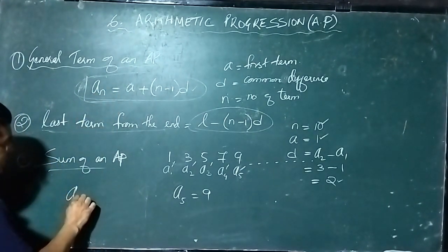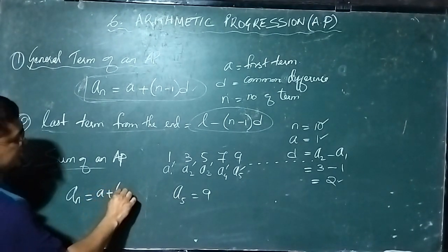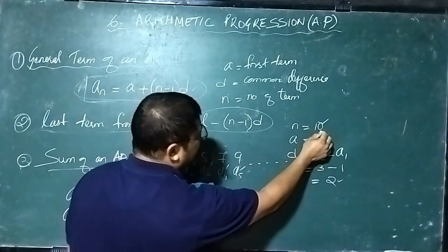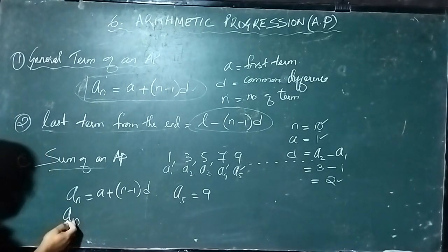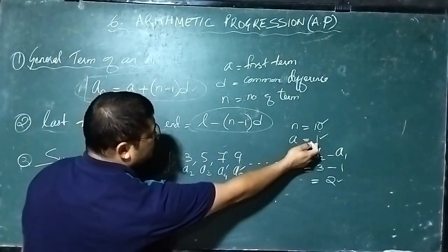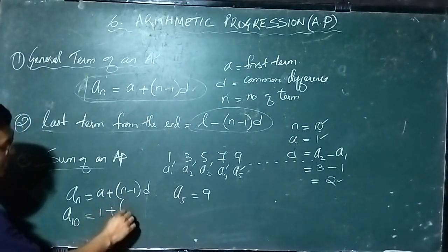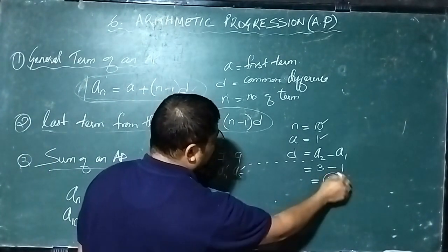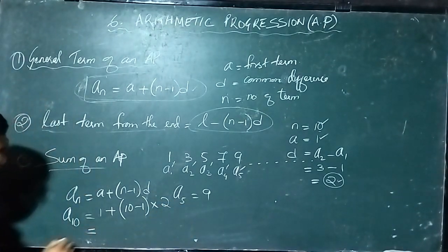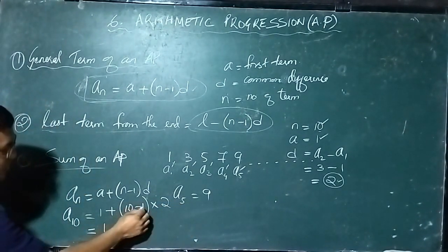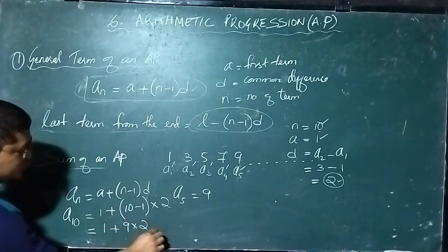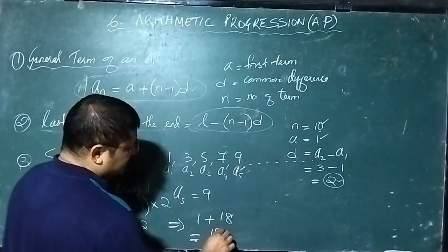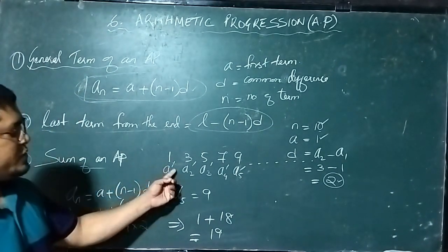The formula is A_n = A + (N−1)D. Here A is the first term, N is the number of terms — we want the 10th term so N is 10 — and D is the common difference. Here the first term A is 1, and D = term 2 minus term 1 = 3 minus 1 = 2. So: A_10 = 1 + (10−1) × 2 = 1 + 9 × 2 = 1 + 18 = 19. So the 10th term of this AP is 19.